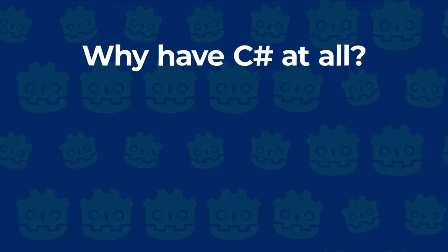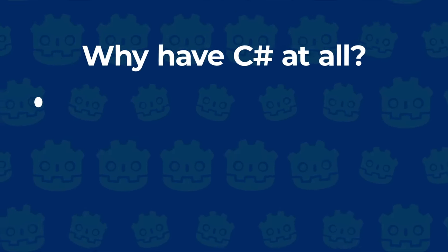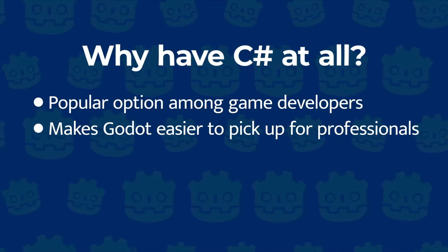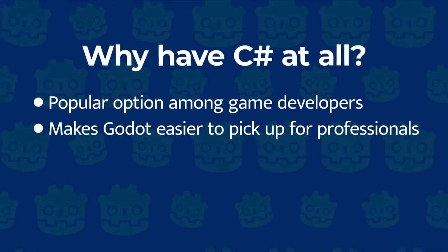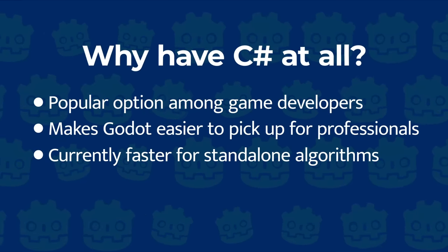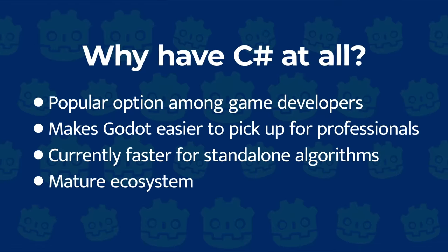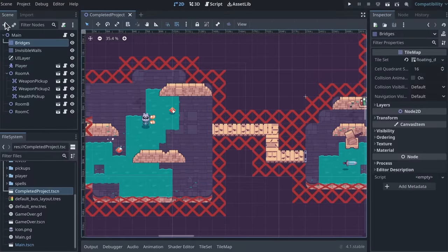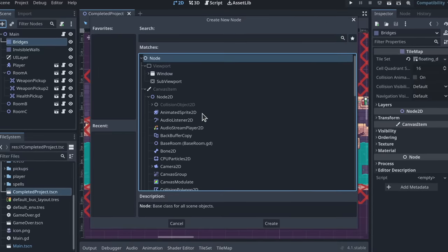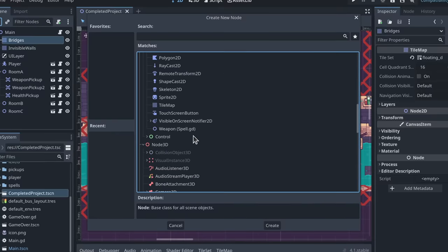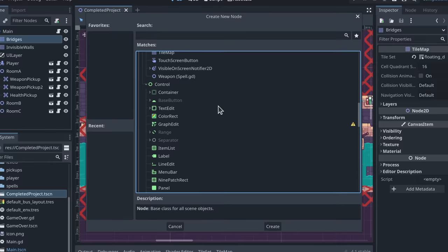So if GDScript is so great, why have C# at all? C# is an especially popular option among game developers, and having it makes Godot much easier to pick up for professionals. Aside from that, there are use cases where C# has an objective advantage over GDScript. It is currently faster for standalone algorithms due to its compilation step, it can use .NET features and the C# ecosystem, and has mature development environments like JetBrains Rider. But while the large ecosystem of C# may sound appealing, Godot has extensive built-in features designed for games, so you'll mostly use those without needing C#'s libraries. If your project doesn't require .NET libraries or optimized standalone algorithms, you won't benefit from C# over GDScript.